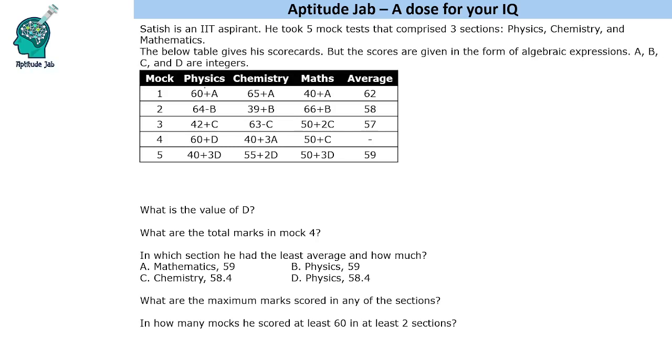The thing here is, we are given the values here and the average here. We can add these values, we will get the total. The total will be basically average times 3. This total is 186, 174, 171 and 177. This we will have to find out because it is asked in one of the questions also.